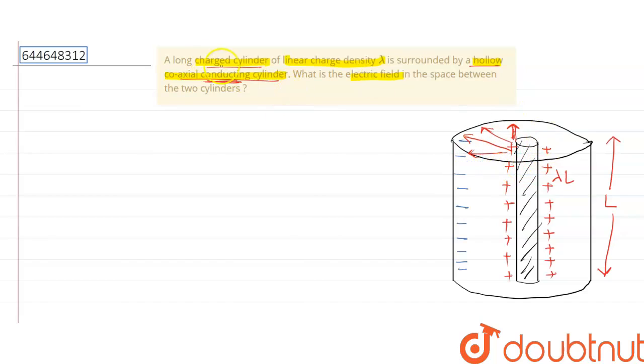Now for this, let us consider a Gaussian surface that is inside the coaxial cylinder and outside the inner cylinder. Let's say this is our Gaussian surface. This is also going with the same length L.